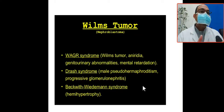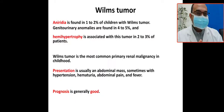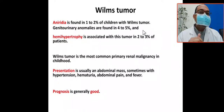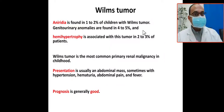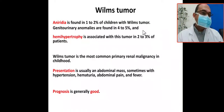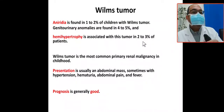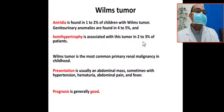Another associated syndrome is Silver-Russell syndrome, which is also associated with hemihypertrophy. Regarding statistics: aniridia is found in almost one to two percent of children with Wilms' tumor; hemihypertrophy is associated in two to three percent of patients; and genitourinary anomalies are associated in four to five percent of cases.